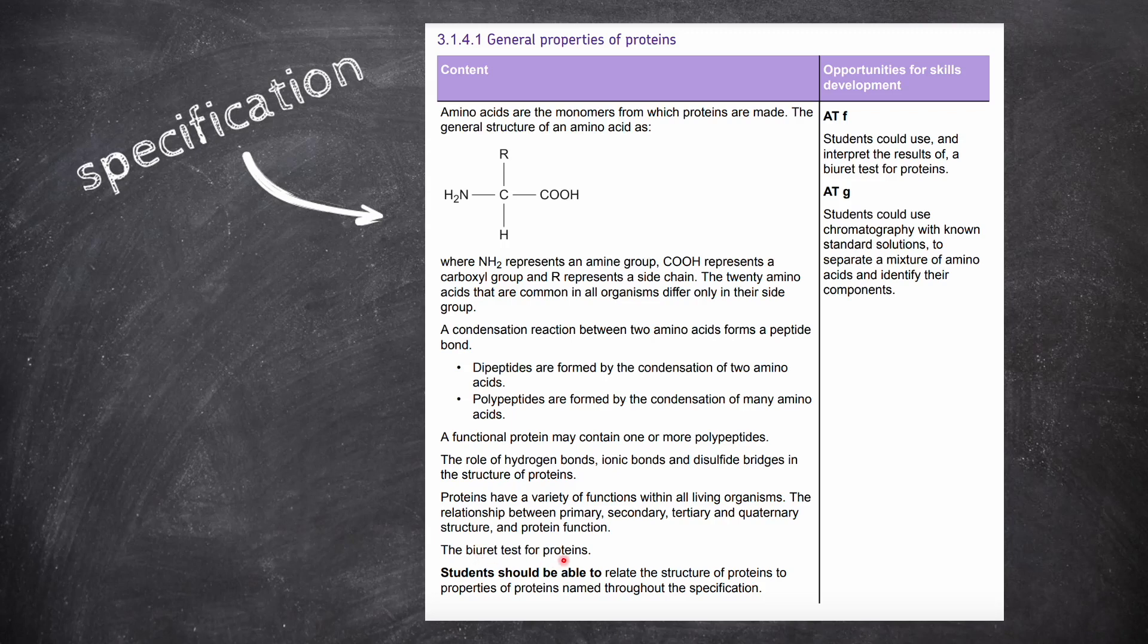The specification also mentions that we should know about the relationship between protein structure and function, and there are plenty of examples of this throughout the rest of the specification, such as enzymes and antibodies, all of which are covered in later videos. So, let's make a start.